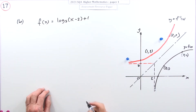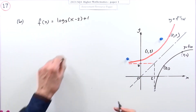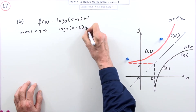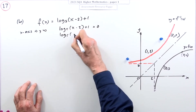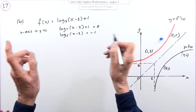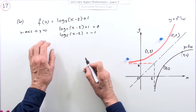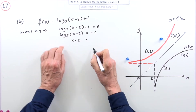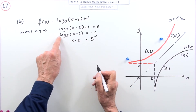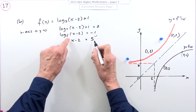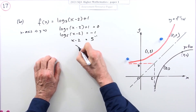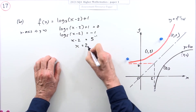Where does this original graph cut the x-axis? It cuts the x-axis when y equals zero, so log base five of (x minus two) plus one equals zero, which means log base five of (x minus two) equals negative one. Using the inverse of log base five - that is, exponential base five - x minus two must equal five to the power negative one, which is one fifth. So x equals two and one fifth, or eleven over five.